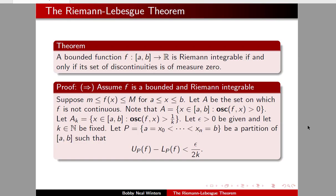What the Riemann-Lebesgue theorem states is: if you have a bounded function from a closed interval [a, b] into the real numbers, then this function is Riemann-integrable if and only if its set of discontinuities is of measure zero. This enables us to switch from worrying about properties of functions to worrying about properties of sets, which sometimes can be simpler.